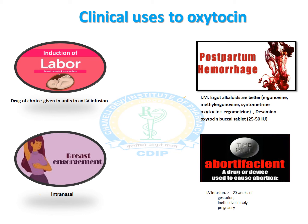Intranasal preparations are used in case of breast engorgement, and oxytocin also acts as an abortifacient — a drug or device used to cause abortion. Intravenous infusion for more than 20 weeks of gestation is required if we want to use oxytocin as an abortifacient. However, it is ineffective in early pregnancy stages, so it won't give an abortifacient effect in early pregnancy.